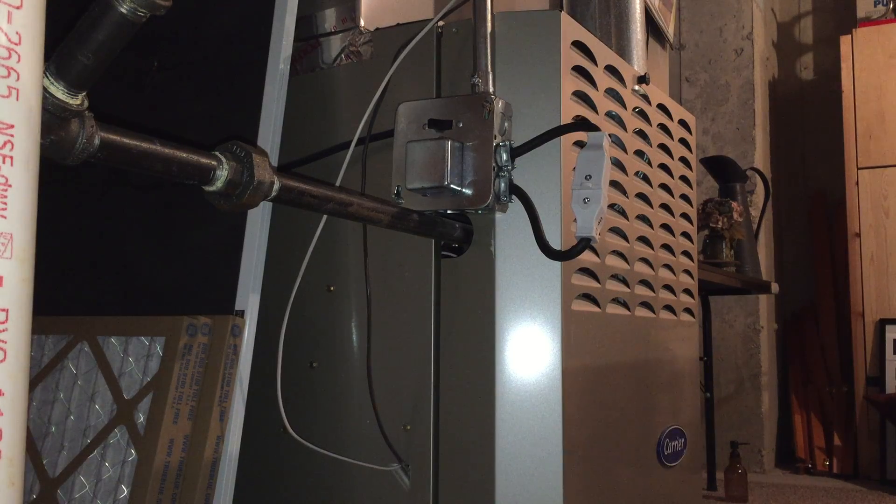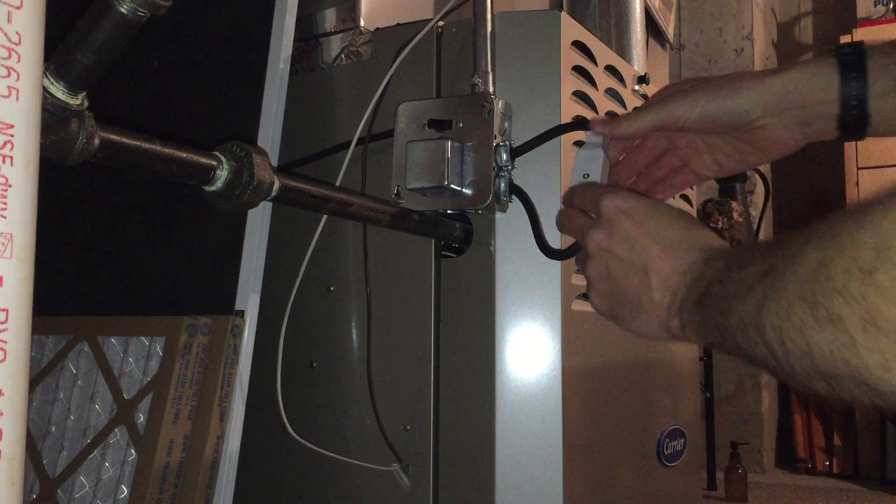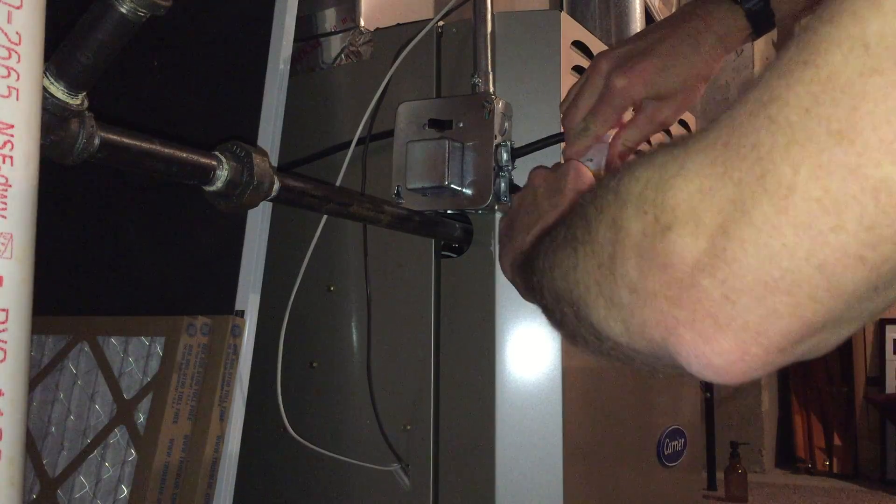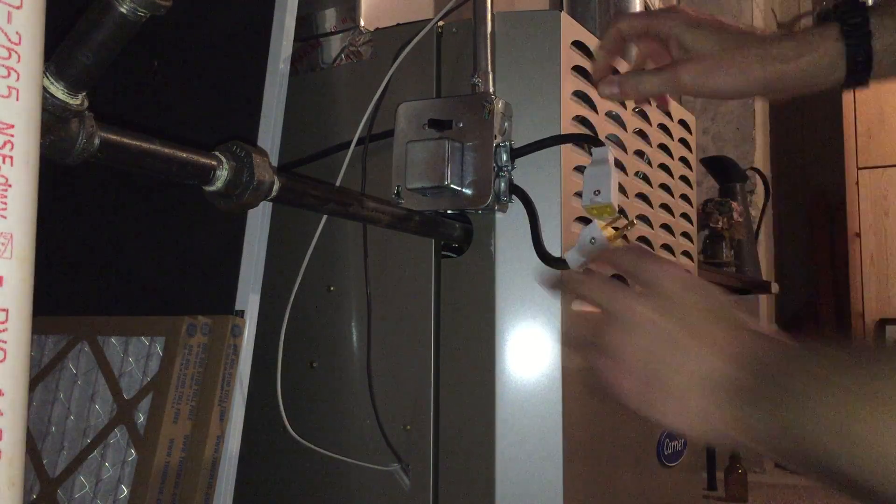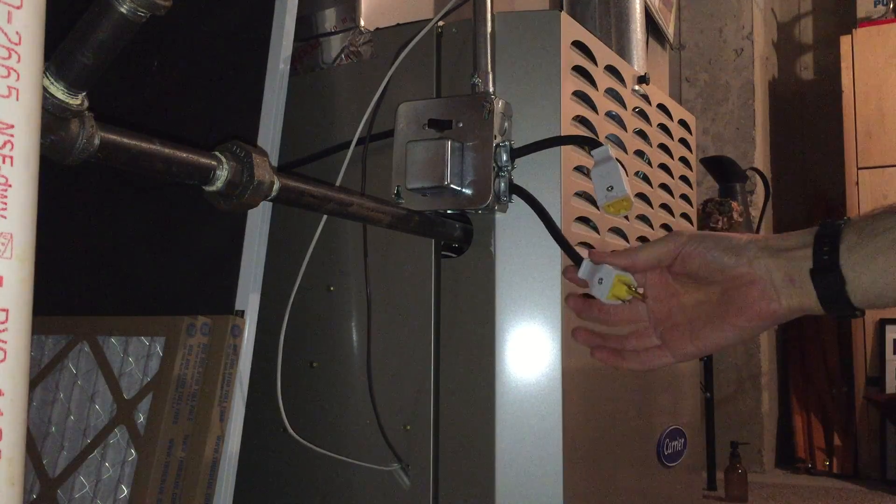So this is how it would be operating normally when I have power from ComEd. In the event of a power outage, what I would simply do is unplug this, and so it's completely disconnected, and now my furnace runs off this stubby cord.